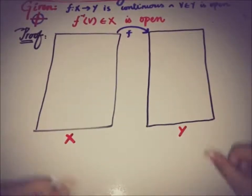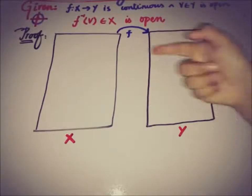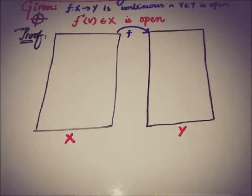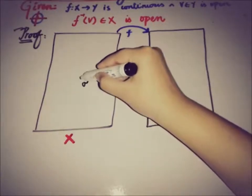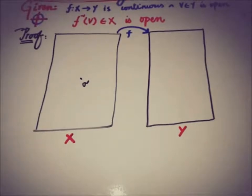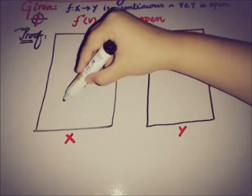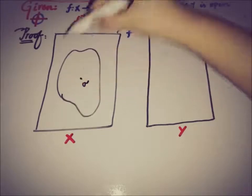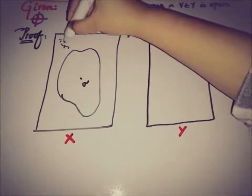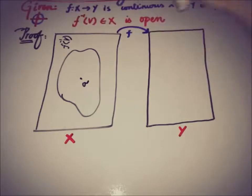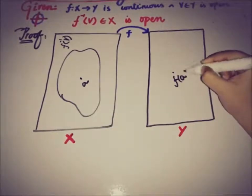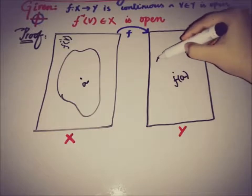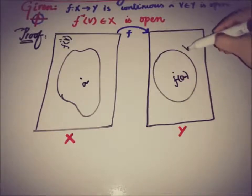We have two spaces X and Y and the function is defined from X to Y. Let's take a point a from X and also assume that a is an element of f⁻¹(V) — the set we have to prove is open. So we know that if there is a point a in X, then there must be an image f(a), and it belongs to the open set V.